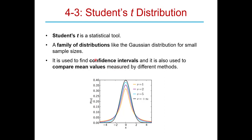So what do we use the Student T Distribution for? We use it for finding something called a confidence interval — basically a sophisticated and precise way of specifying error bars and uncertainties in a measurement. They can also be used in something called a t-test to compare mean values to one another.